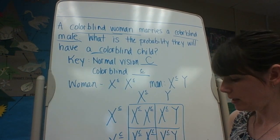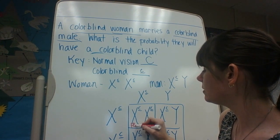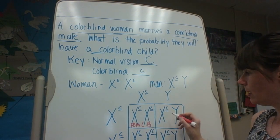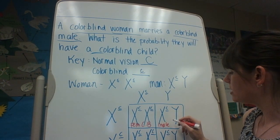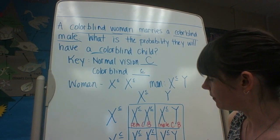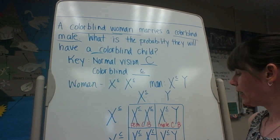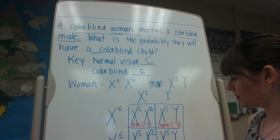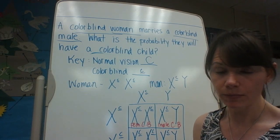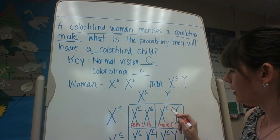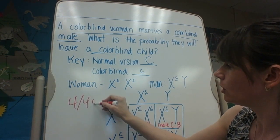Looking at the boxes: this female has two recessive alleles — she is colorblind. This male has X little c, Y with one recessive allele — he is also colorblind. Here we have another female with two recessive alleles — she is colorblind. And another male with one recessive allele on his X — he is also colorblind. So in every box we see only recessive alleles. The probability is 4 out of 4, or 100%.